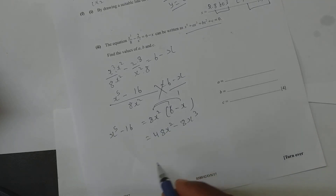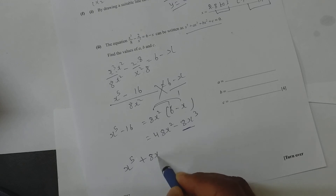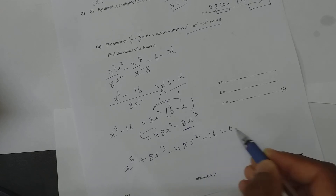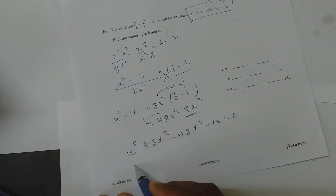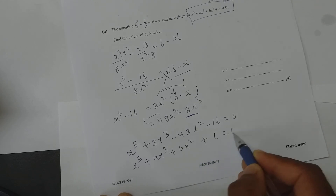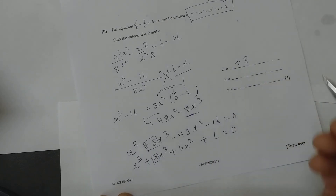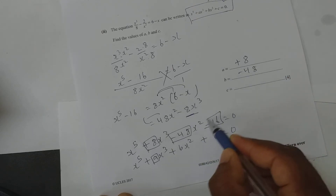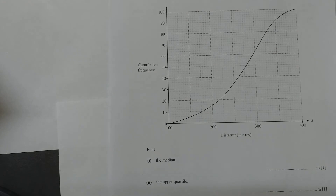Bring all terms to one side: x⁵ + 8x³ - 48x² - 16 = 0. Compare with the given form x⁵ + ax³ + bx² + c = 0. Therefore a = 8, b = -48, and c = -16.